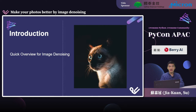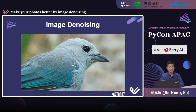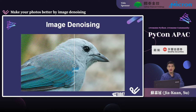Let's have a quick overview for our topic. The goal of image denoising is to recover a high-quality image from its noisy or degraded version. It is one of the fundamental problems in the domain of image processing and computer vision. As you see in the slide, the quality of the bird image becomes much better after image denoising. There are many softwares and services that provide functions for image denoising, and most of them use modern AI to solve the problems.